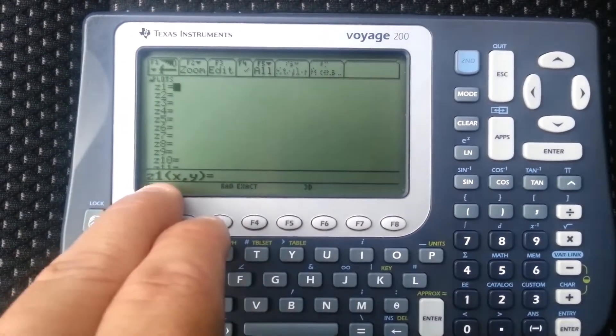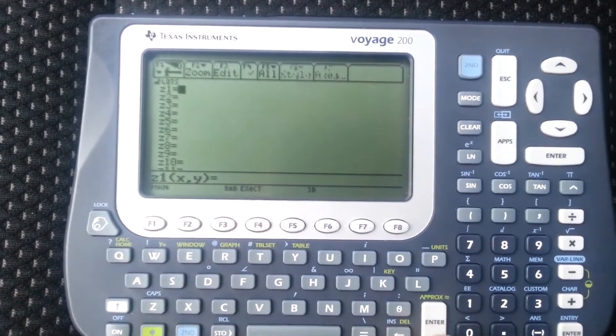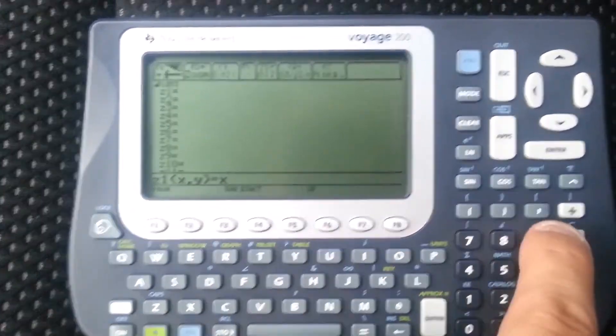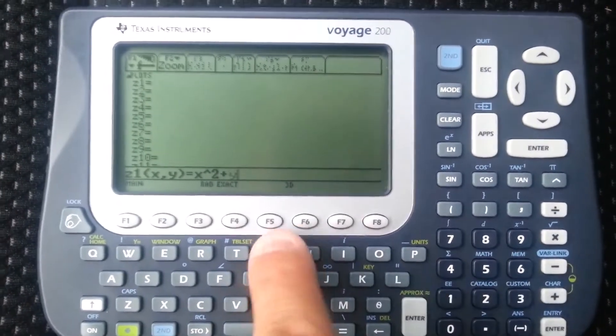And now see, z is a function of x and y. So let's do x squared plus y squared.